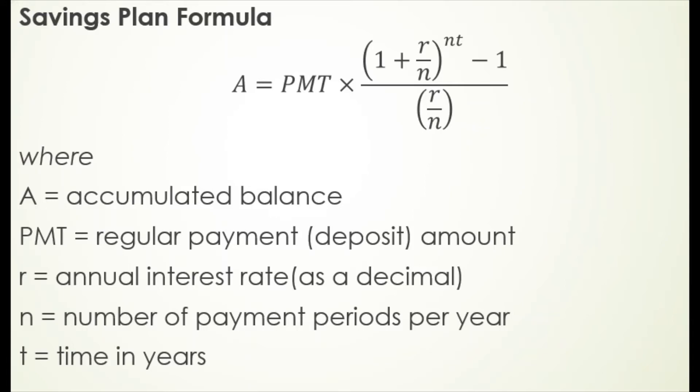The payment now, the PMT in this formula, is the regular amount that we're depositing into this account. A is still the accumulated balance, r is still the annual interest rate as a decimal, n now is the number of payment periods per year. Recall that in our compound interest formula n was the number of times we were compounding our interest each year. And t is still the time in years. So this is our formula that we're going to use for calculating the balance in a savings plan.